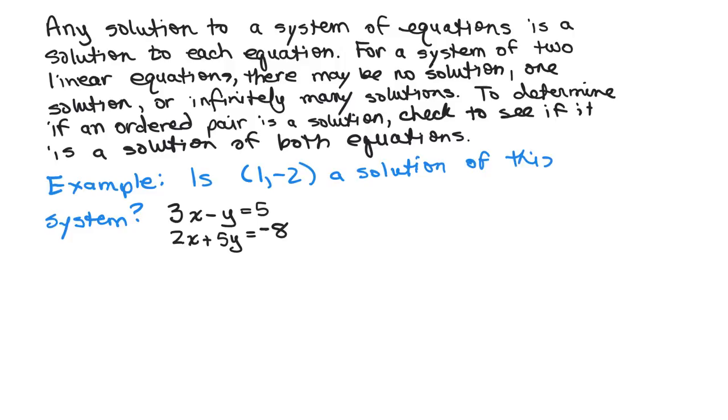A system basically means you have more than one equation. Any solution to a system of equations has to be a solution to each of the individual equations. Three things can happen if we have two linear equations.